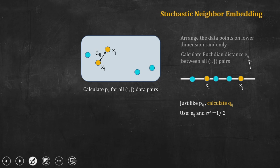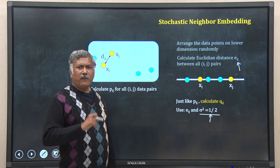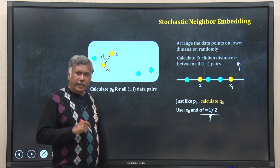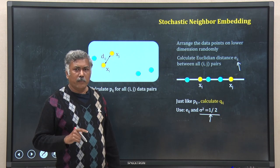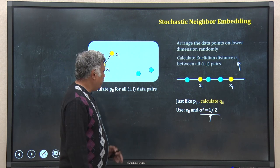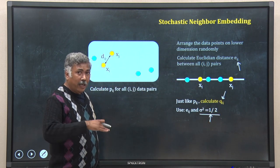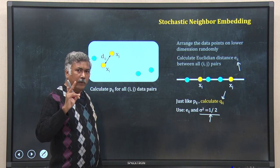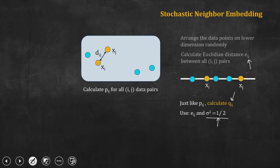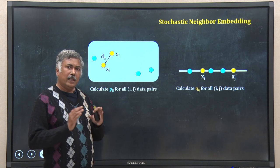As we are not using the distance measure in higher dimension directly but are calculating probability using Gaussian distribution, we do the same for the lower dimension. We use the same normal distribution function but with E_ij in place of d_ij, and with sigma squared set equal to one half. This simplifies the calculation. So, just like p_ij, I calculate q_ij for all 10 pairs in the lower dimension.